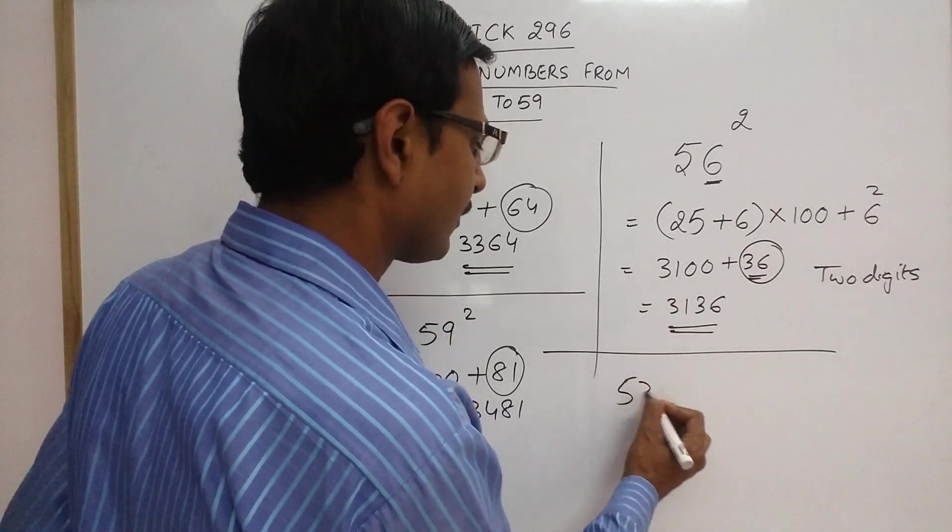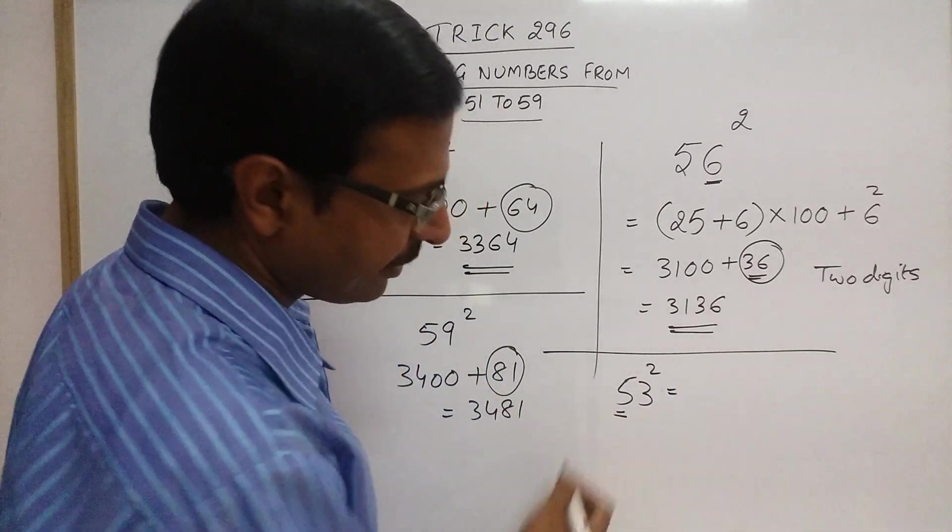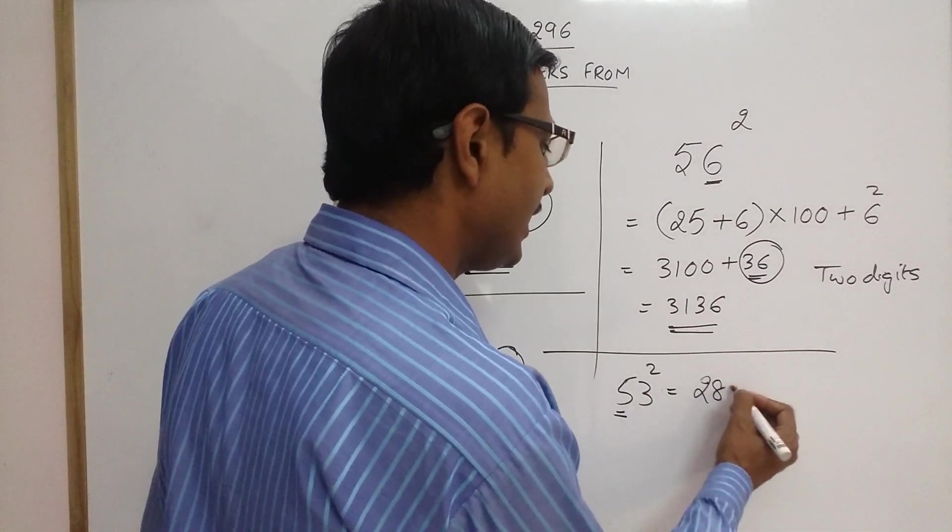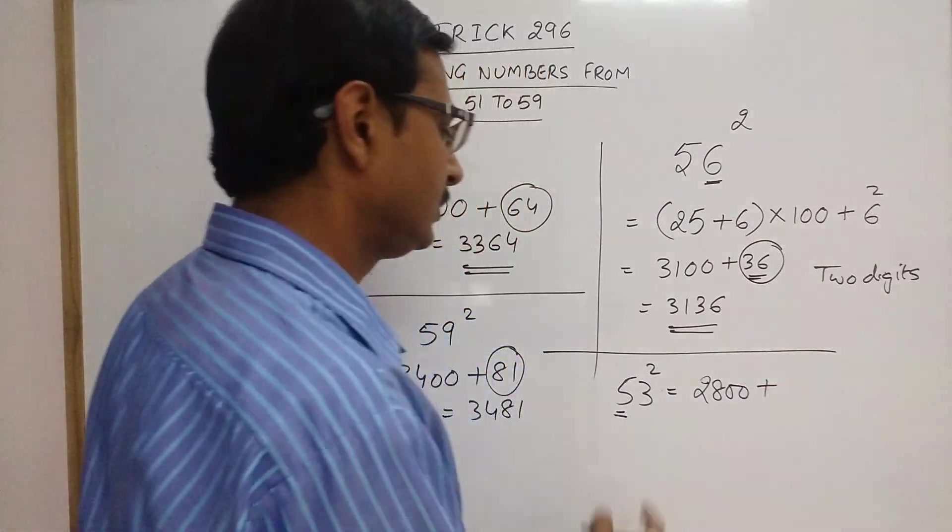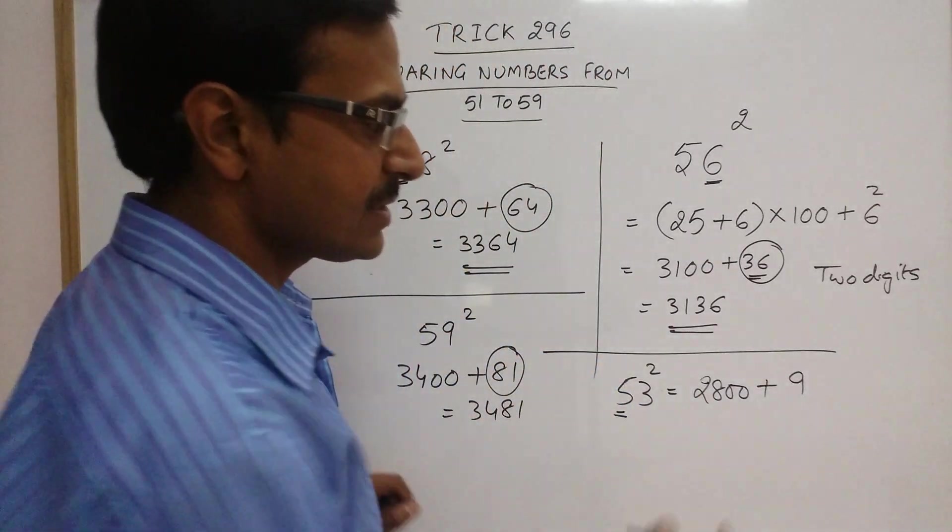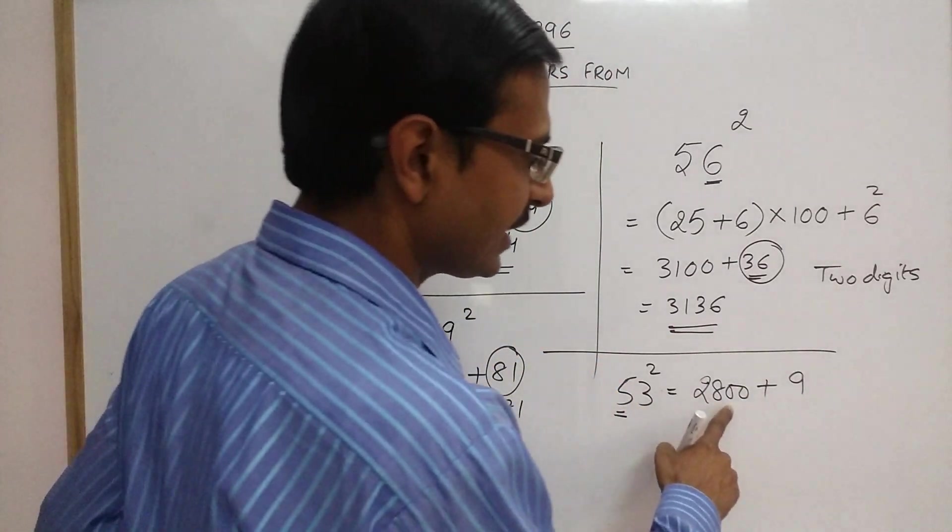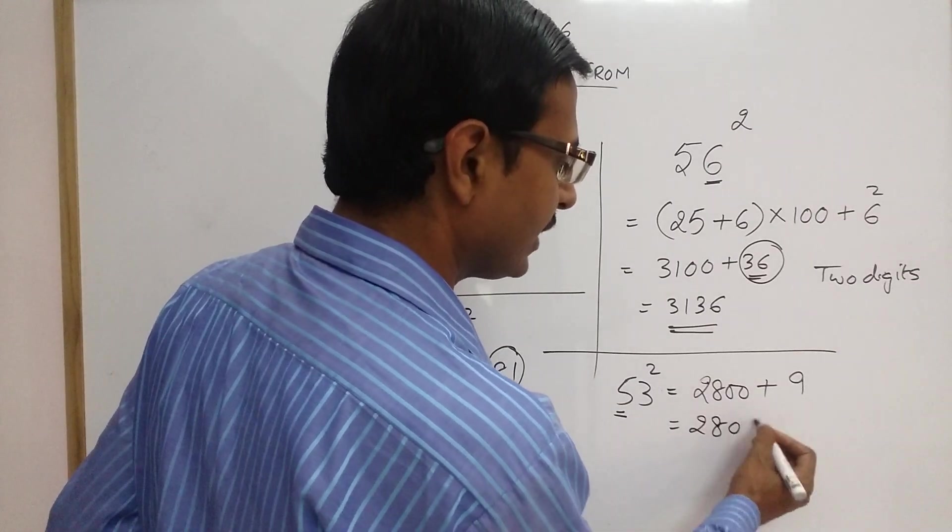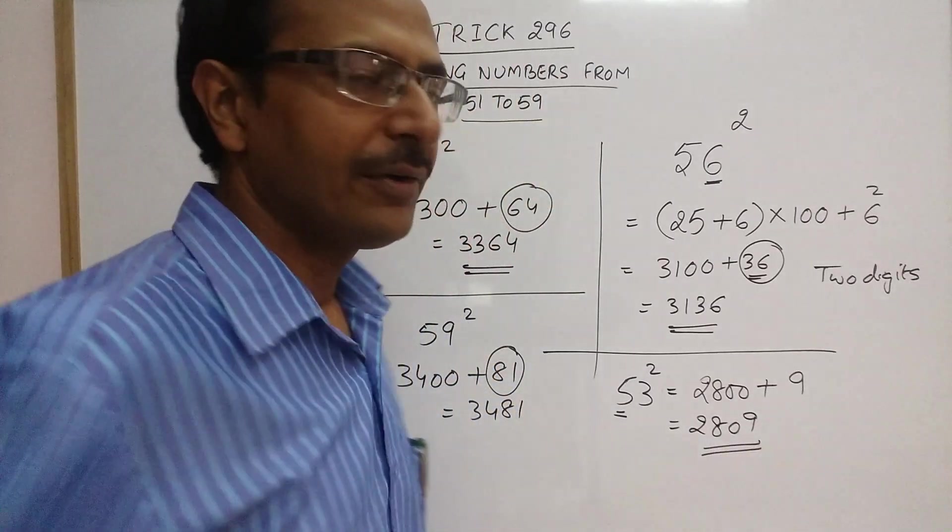Say 53. So 25, 5 square is 25 plus 3 is 28. So 2800, and 3 square is 9. Now this is a single digit, so obviously there is a 0. So 0 will come automatically. So 2809 is the square of 53.